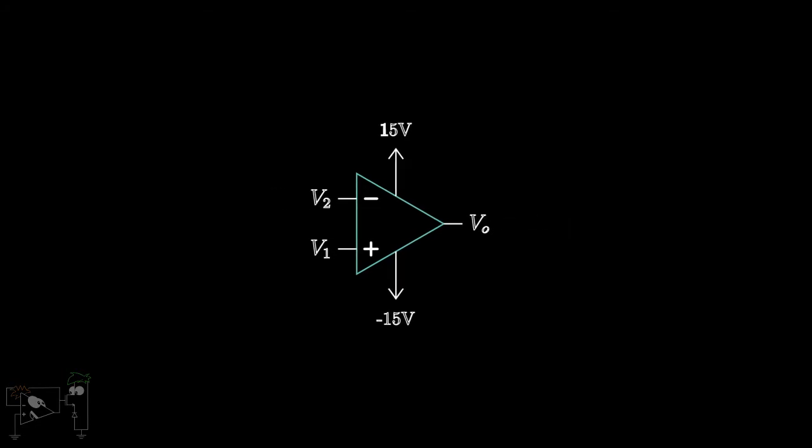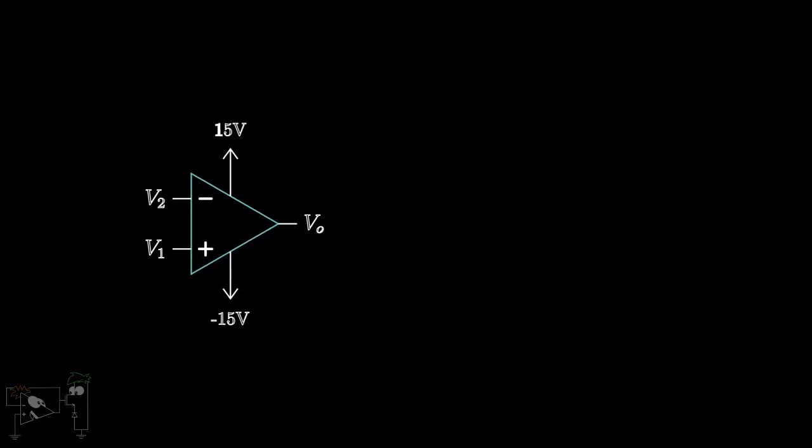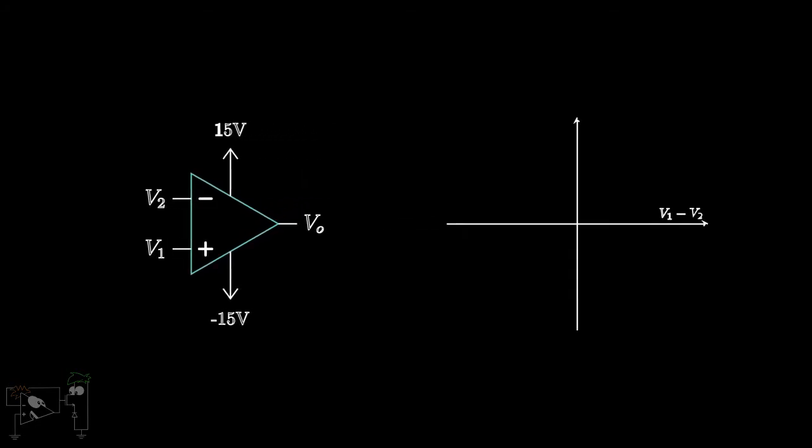The same can be seen from the transfer characteristics of an open-loop op-amp. As long as V1 minus V2 is less than zero, Vout is minus Vsat, and when V1 minus V2 is greater than zero, Vout is Vsat.